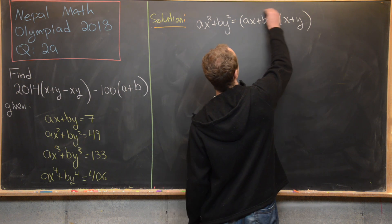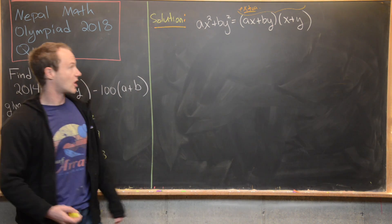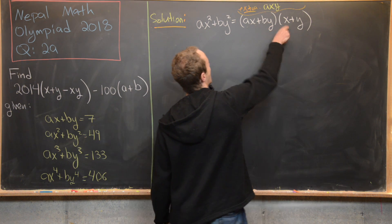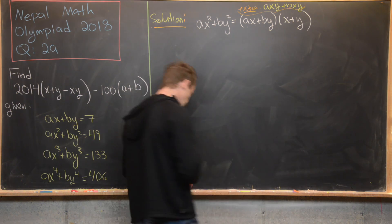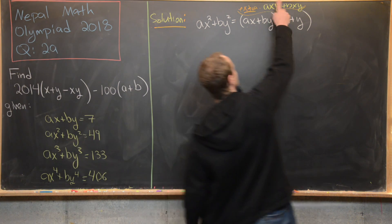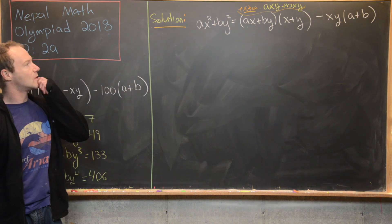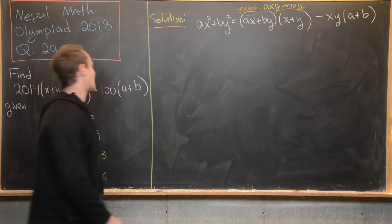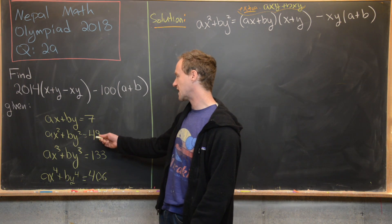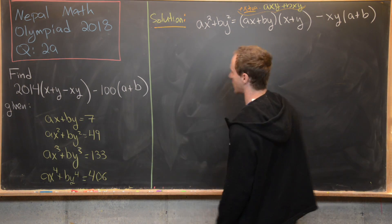The extra cross terms from multiplying out are axy + bxy, which share a common factor of xy. So we can eliminate them by subtracting xy·(a + b). This means we can't write the second equation purely in terms of the first, but we can write it in terms of the first equation plus our goal terms xy and a + b — which is exactly what we want.